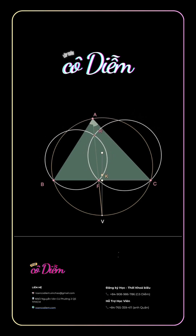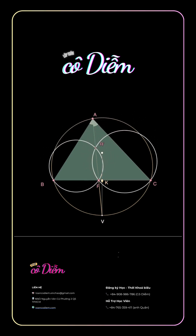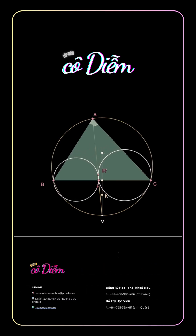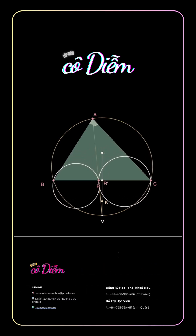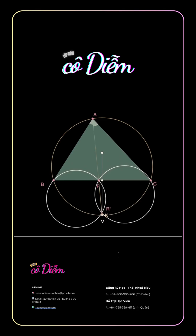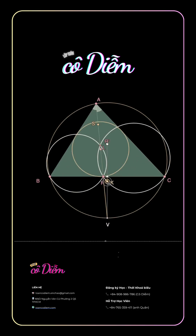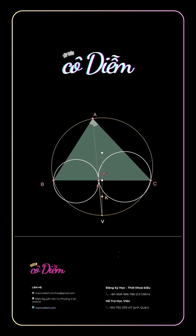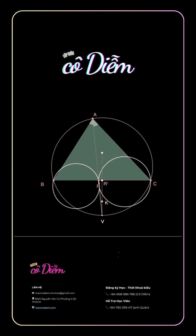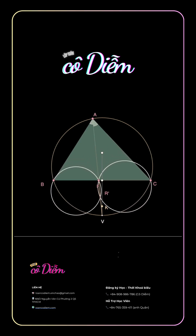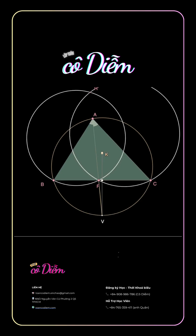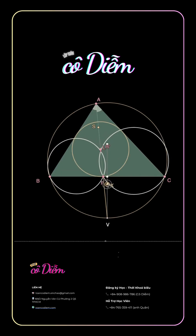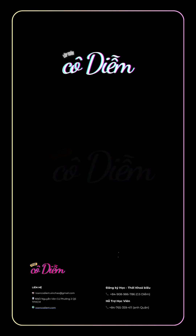Remark: If the center of any circle passing through points B and C intersects sides AB and AC at points M and N, then point R moves along the bisector of angle BAC, and the two circles O1 and O2 pass through a fixed point F. When R is the reflection of the incenter of triangle ABC, then we have the IMO 2024 Problem 4.